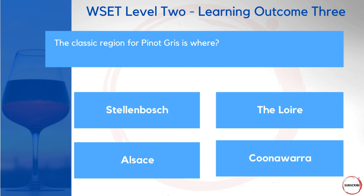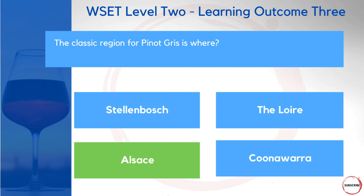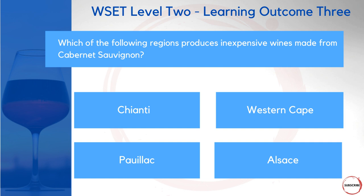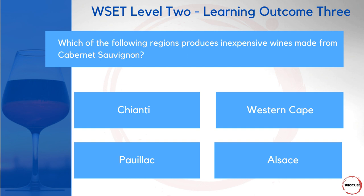The classic region for Pinot Gris is where? Stellenbosch, the Loire Valley, Alsace, or Coonawarra? Since the Pinot Gris card only covers European regions, you can discount Stellenbosch and Coonawarra straight away. That leaves the Loire and Alsace — and Pinot Gris is a classic in Alsace. Which of the following region produces inexpensive wines made from Cabernet Sauvignon? Chianti, the Western Cape in South Africa, Pauillac, or Alsace? Alsace and Chianti aren't known for Cabernet Sauvignon; Pauillac is known for expensive wines — leaving the Western Cape as the answer.